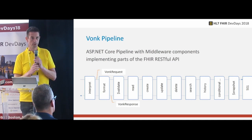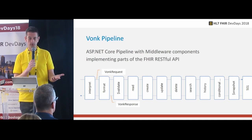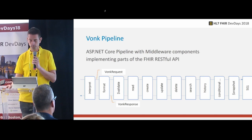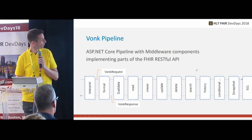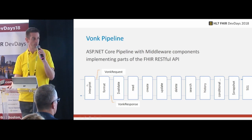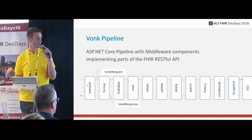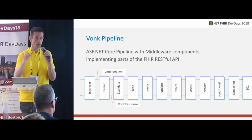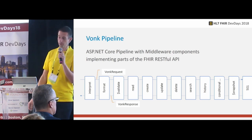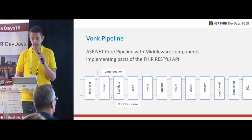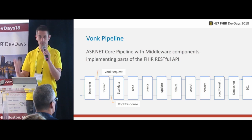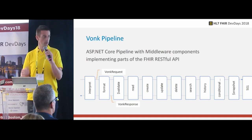Vonk is built upon the ASP.NET Core pipeline — we just utilize that pipeline. On the front row there's a component that interprets the request and tells Vonk what kind of request it is: is it a read, a search, a conditional create? What format is requested? What format is the body? We translate everything from the raw HTTP request to something that is much more readable in the rest of the code.